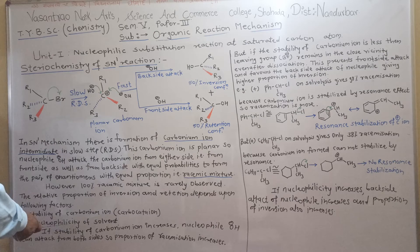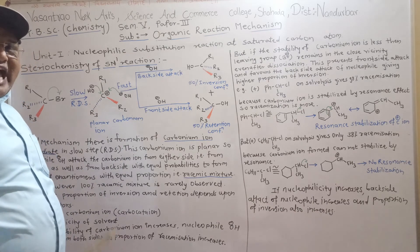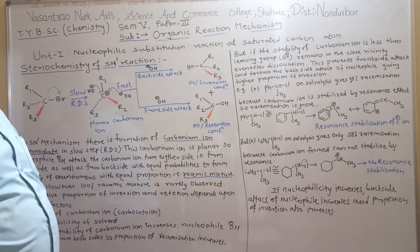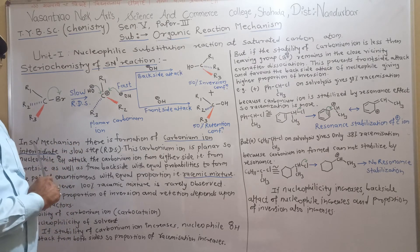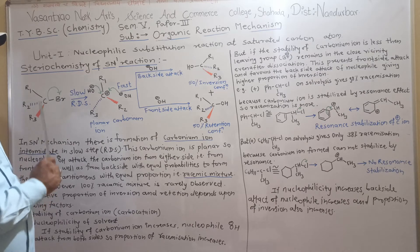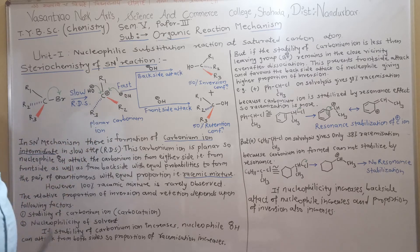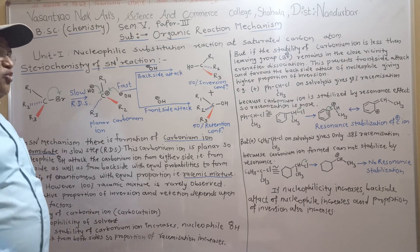Similarly, the second factor which affects the proportion of inversion and retention is the nucleophilicity of the solvent. The ability of a nucleophile to donate an electron pair to the carbonium ion is called nucleophilicity. If the nucleophilicity increases, it favors the back-side attack of the nucleophile and prevents the front-side attack. Therefore, the percentage of inversion of configuration increases.